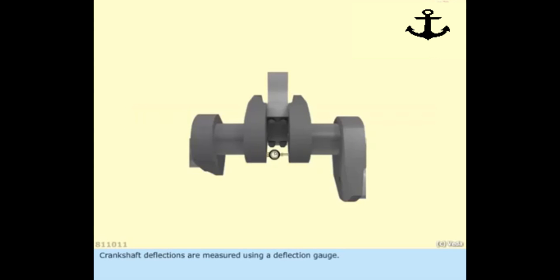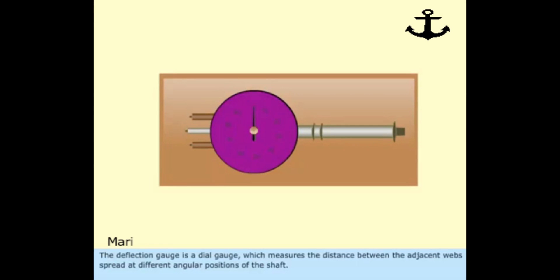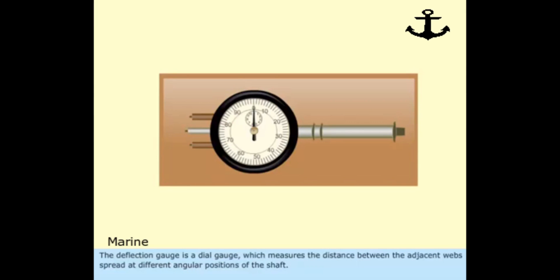Crankshaft deflections are measured using a deflection gauge. The deflection gauge is a dial gauge which measures the distance between the adjacent webs spread at different angular positions of the shaft.